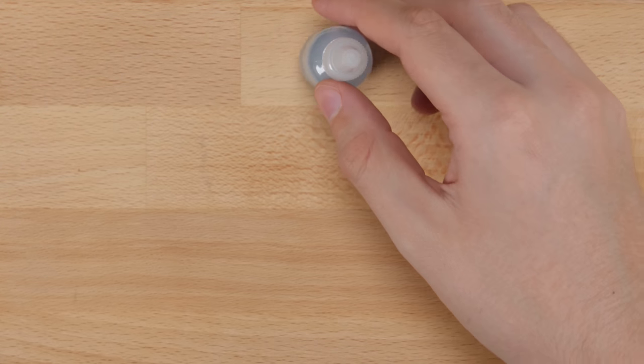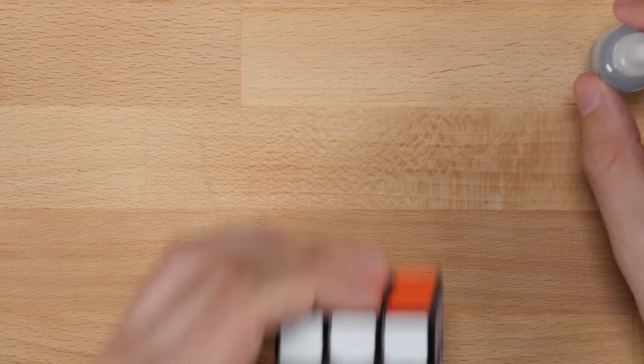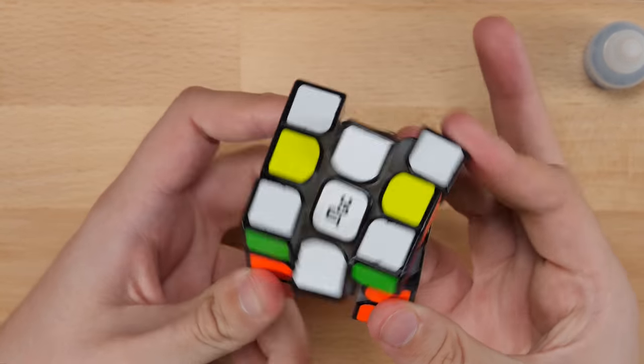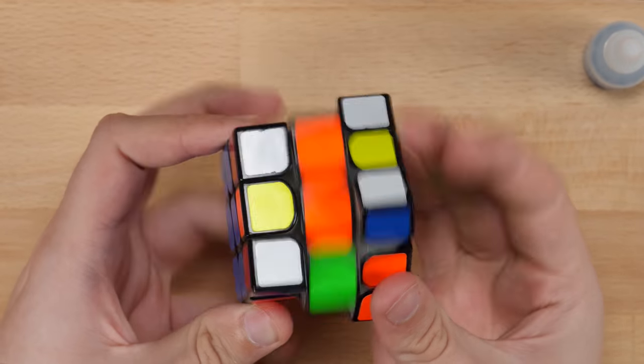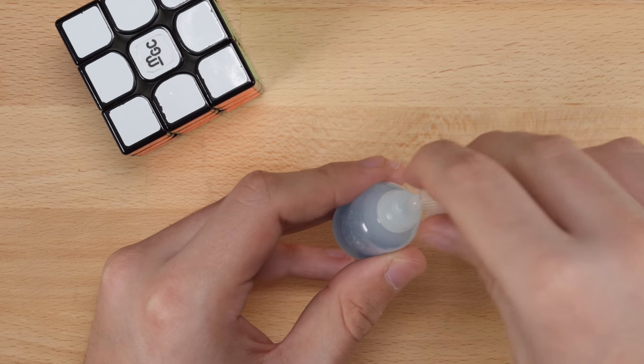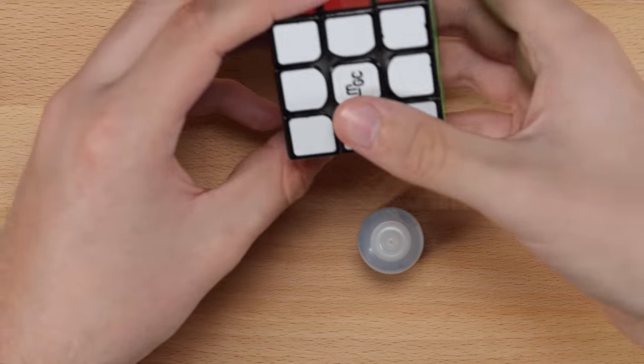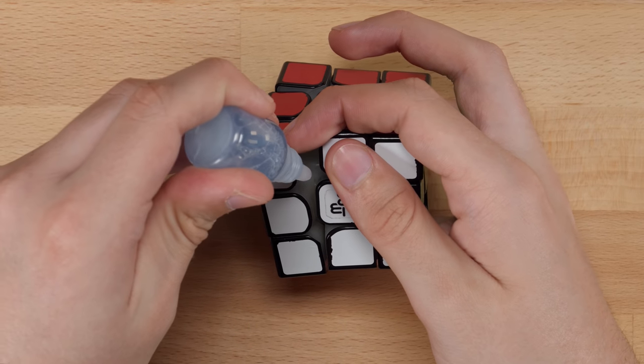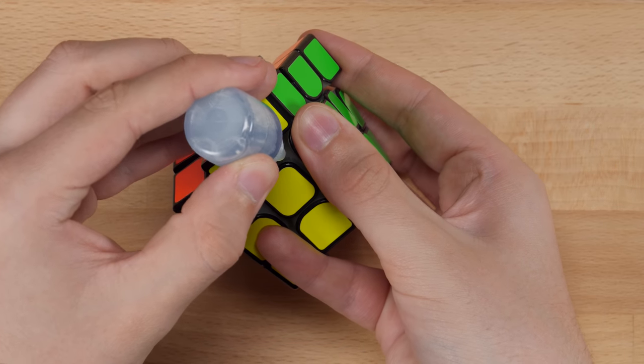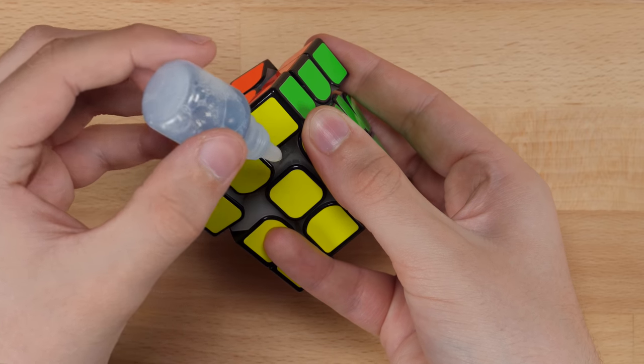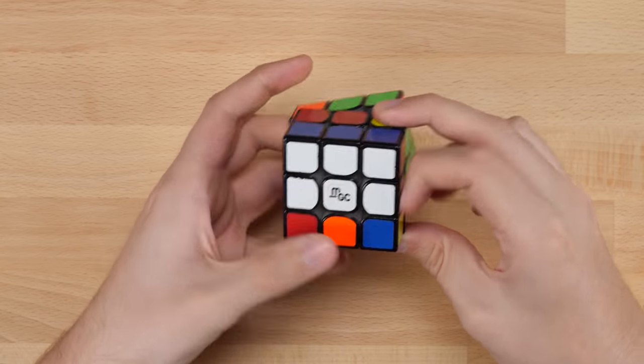I think we'll go ahead and start with Compound 5 and I'm going to test this on the YJMGC. So this is a relatively slow puzzle. It's a little bit sluggish. It's not all that fast. So I want to see if I can speed it up with some of this stuff. So we're going to go ahead and put in one drop right here. Go ahead and drop in one there. All right. So let's go ahead and break the lube in.